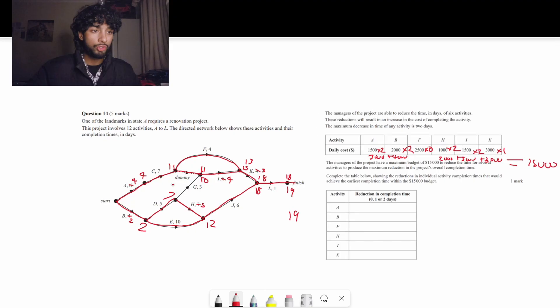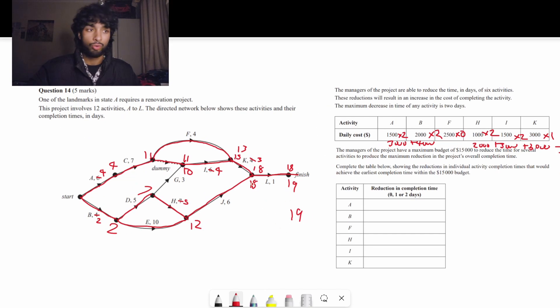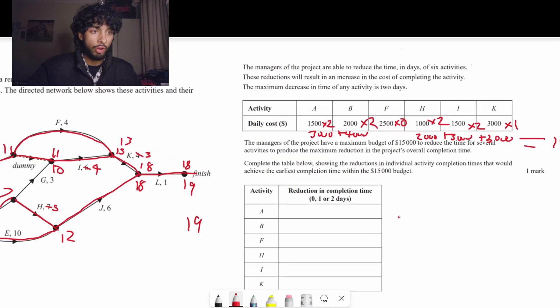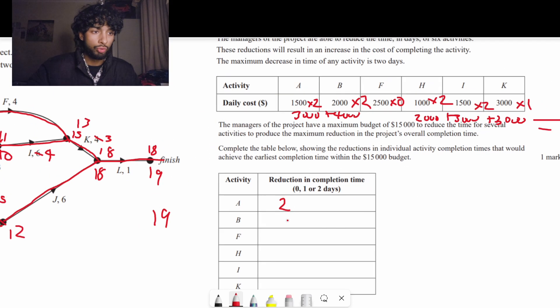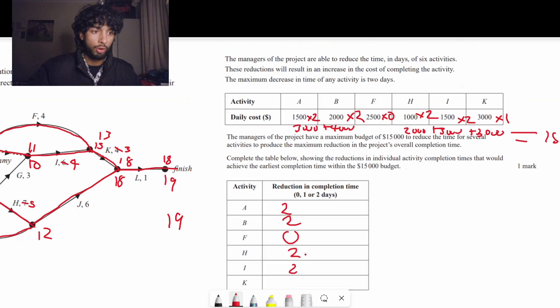So currently we have 2 A crashes, 2 B crashes, 0 F crashes, 2 H crashes, 2 I crashes, and 1 K crash. That equals $15,000. And that means we are still in the budget. And that also means we've reached that 19 goal a lot faster. So as you can see, method 2 was so much faster. So we can straight away write in our answers. 2, 2, 0, 2, 2, 1.